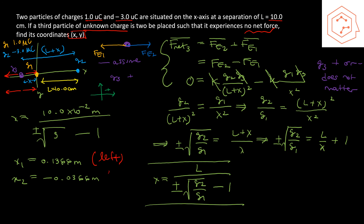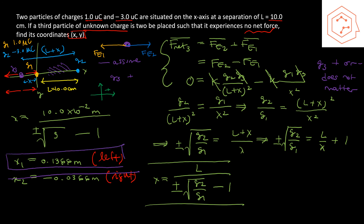The negative root places q3 in the middle region between q1 and q2, where we established the forces can never cancel, so that value is inadmissible. Our final answer is x₁ = 0.1366 m to the left of the origin. Therefore, the (x, y) coordinate position in meters is (−0.1366, 0), since it lies on the x-axis to the left of the origin.